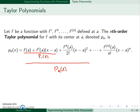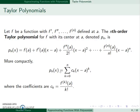So these are the Taylor polynomials. More compactly, we can write it as the summation from k equal to 0 to n of c sub k times x minus a to the k, where our coefficients are the kth derivative of a over k factorial.